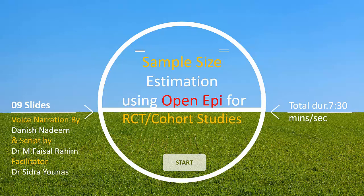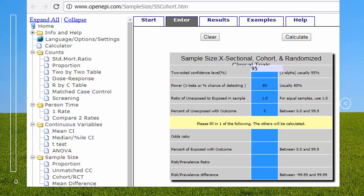To access this software type www.openapi.com in the address bar. You will see the home screen of the software. Now click sample size tab and then cohort RCT studies. You will see this interface shown in the slide.